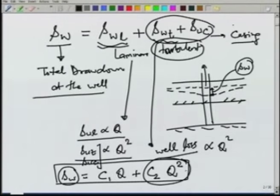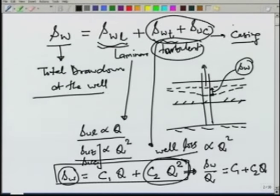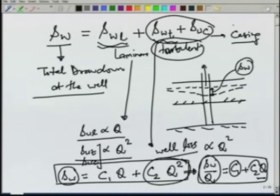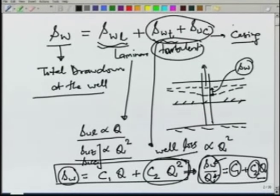To find out the constants C₁ and C₂, we can pump the well at different rates and note down the drawdown at the well S_w for different Q values. We can write this as S_w/Q = C₁ + C₂Q, which indicates that if we plot S_w/Q versus Q, we would get a straight line where the intercept gives us C₁ and the slope gives us C₂.